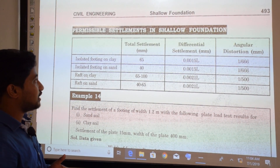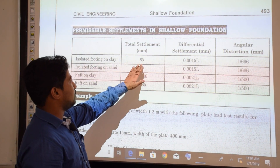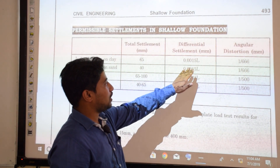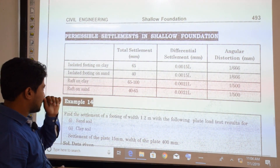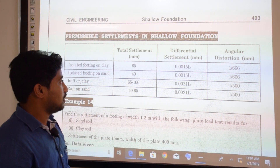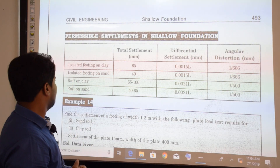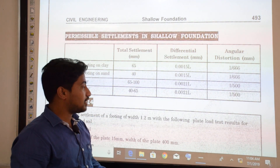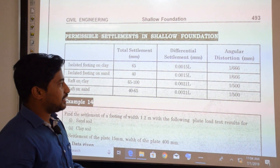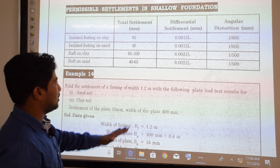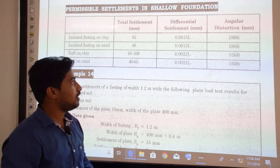The permissible settlements for shallow foundations per IS code are: isolated footing on clay — total settlement 65 mm, differential settlement 0.0015L, angular distortion 1/666; isolated footing on sand — total 40 mm, differential 0.0015L, angular distortion 1/666; raft on clay — total 65–100 mm, differential 0.0021L, angular distortion 1/500; raft on sand — total 40–65 mm, differential 0.0021L, angular distortion 1/500.